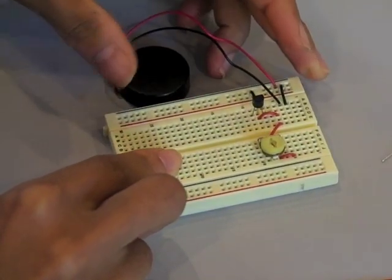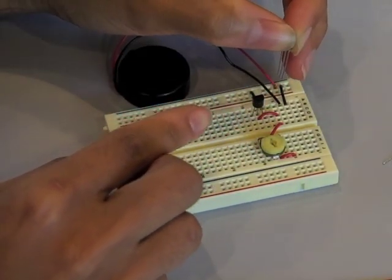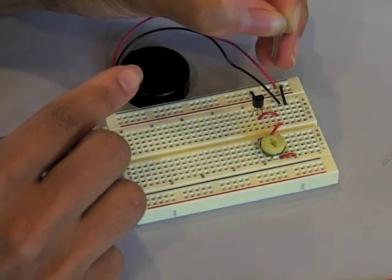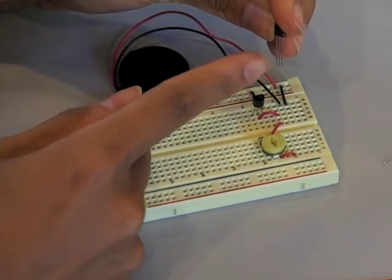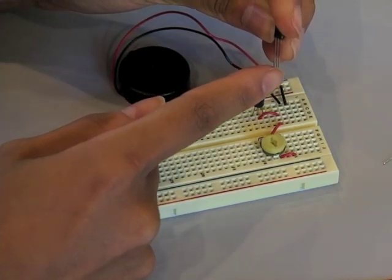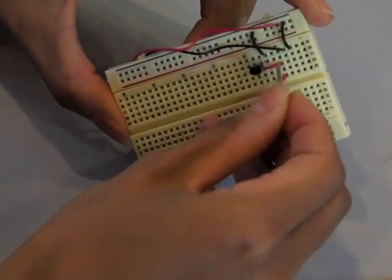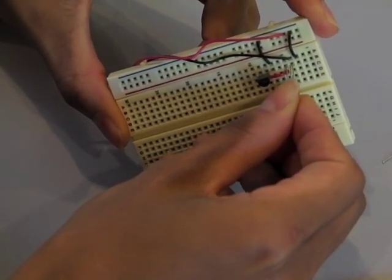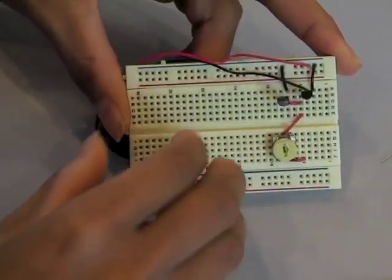Now I'm going to add the transistor. You want to hold the transistor downward and with the flat part of the face facing toward you. The left leg will go into 3B, the middle leg into 4B and the right leg into 5B.